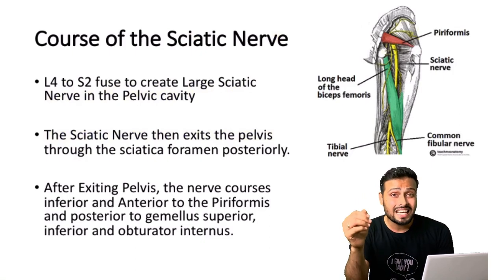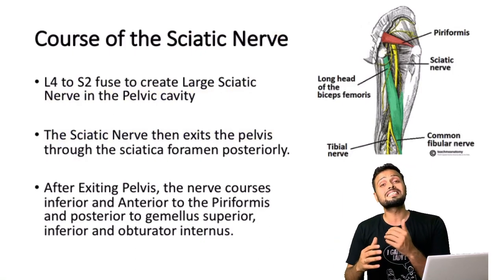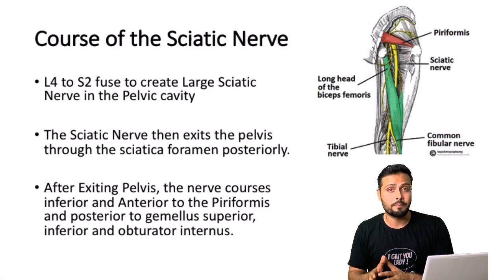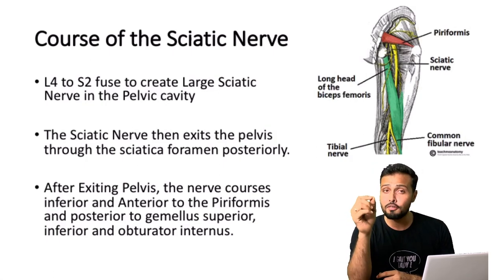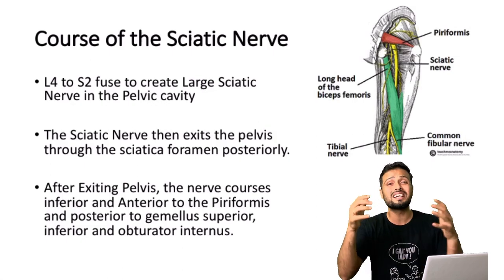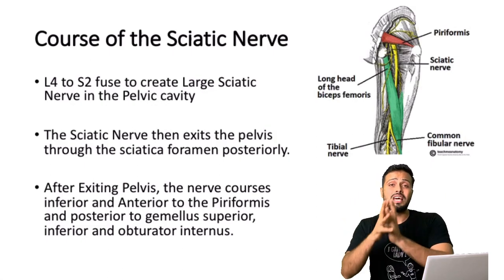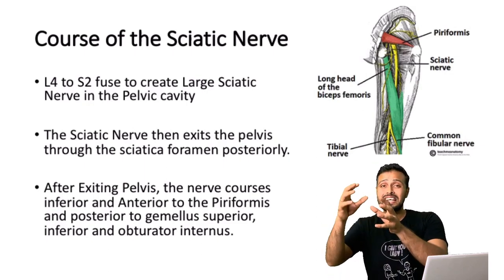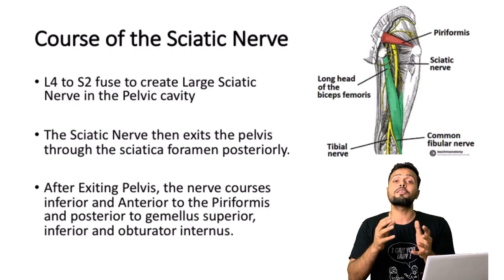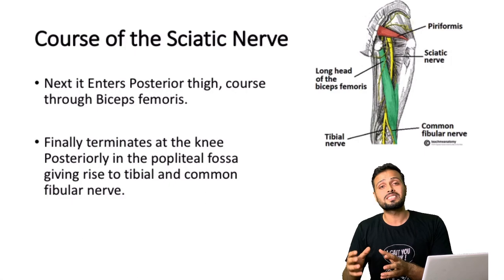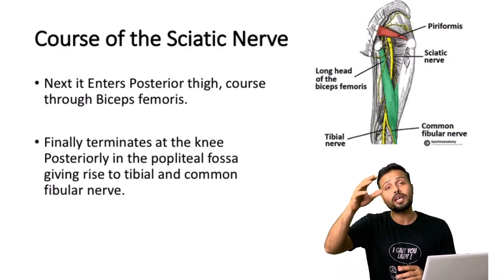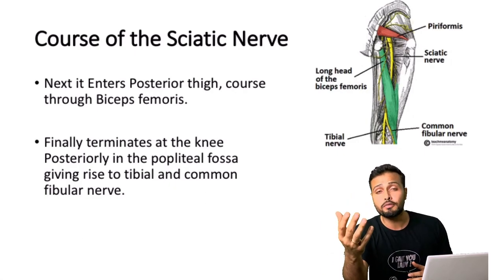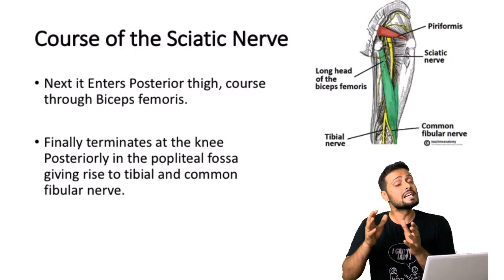It is very important that we understand the course of the sciatic nerve so that we can better understand the patient's symptoms and identify and investigate this condition. This nerve starts from the L4 to S2 nerve roots, which combinedly form this nerve. It starts at the lumbar plexus, goes through the pelvis, and when it exits the pelvis it travels anteriorly and inferiorly to the piriformis muscle. From there it goes along the back of the thigh with the biceps femoris muscle, and then branches into two nerves at the popliteal fossa — the common peroneal nerve and the tibial nerve.